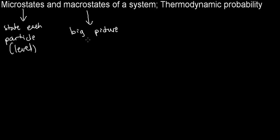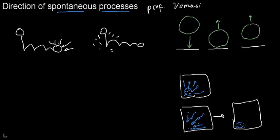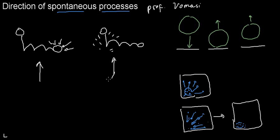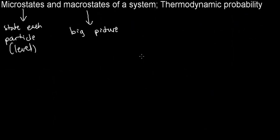A microstate pertains to the state of each individual particle — what each little billiard ball is doing. A macrostate is the big picture — what all the balls are doing at a given point. Importantly, a ball gathering energy from the air and bouncing up does not violate the first law of thermodynamics. Energy is being transformed, not created. We just don't see it in everyday life, and we're about to understand why.